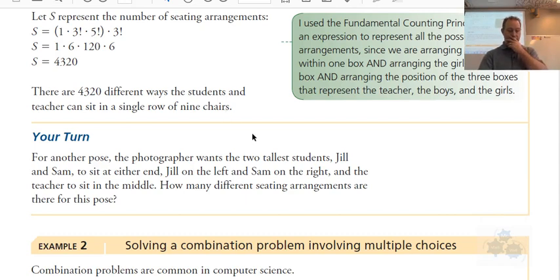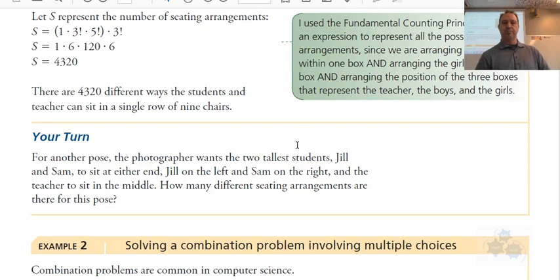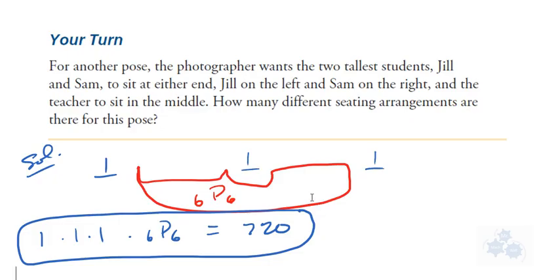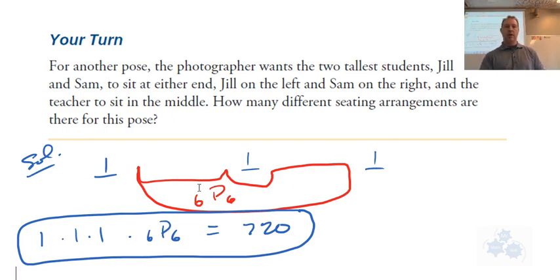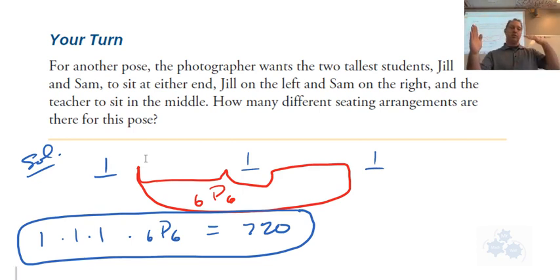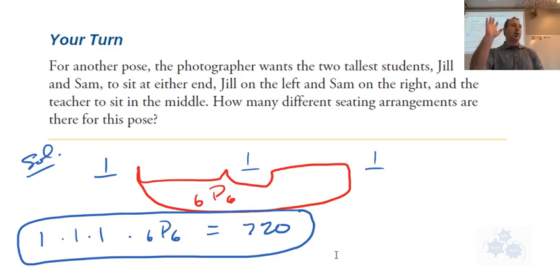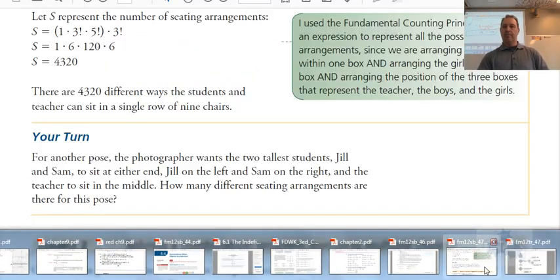Now for the 'Your Turn': specific students must be at each end, so that's one choice for the first spot, one choice for the last spot, one teacher for the middle, and then the remaining six students can go in any order — so 6! or P(6, 6). That gives you 720. How many got 720? Good job.